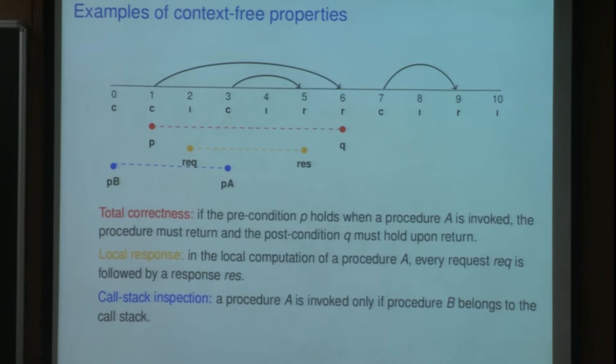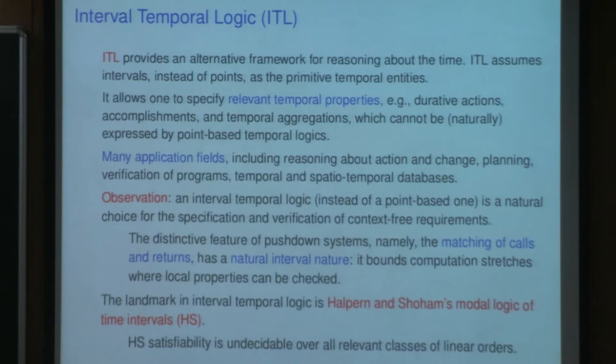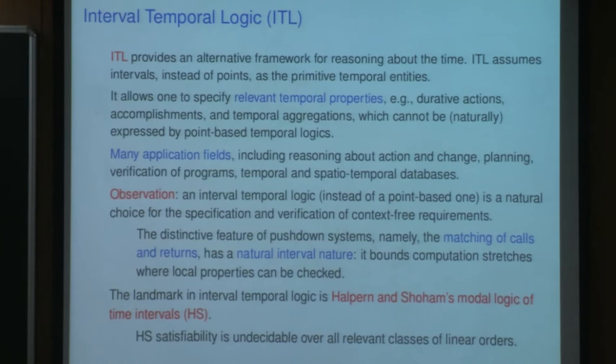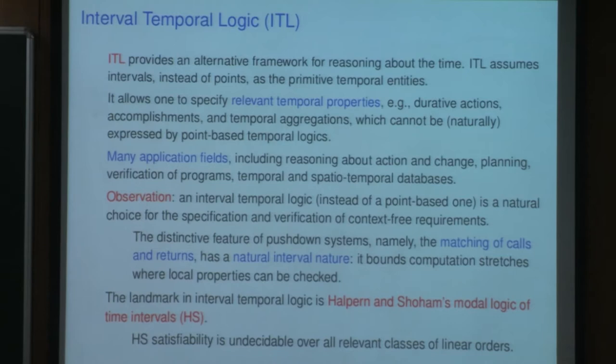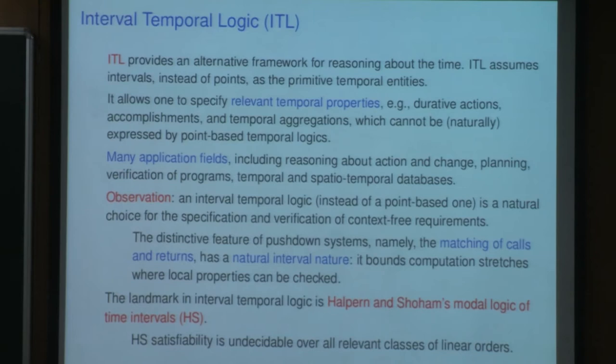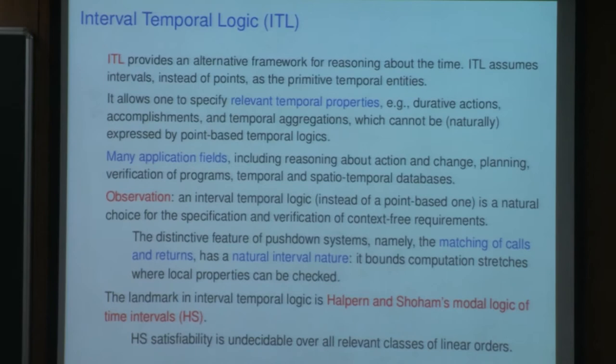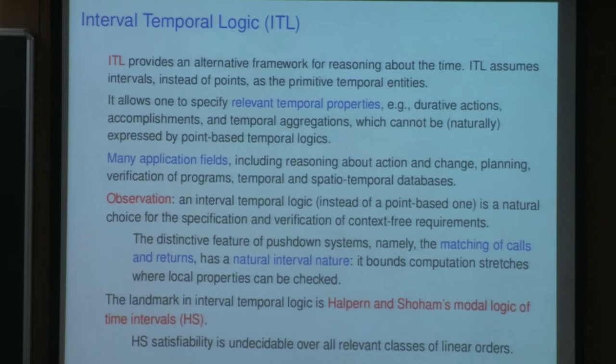Now we move to interval temporal logic. Interval temporal logic essentially takes intervals instead of points as the primitive temporal entities. According to this assumption, this logic can naturally describe some relevant temporal conditions which are not naturally dealt with in standard point-based temporal logic. For example, you can deal with temporal aggregation: you may want to constrain the speed of a given device to be not above a given threshold on average, and this is a property that makes sense only if you consider intervals, not points.